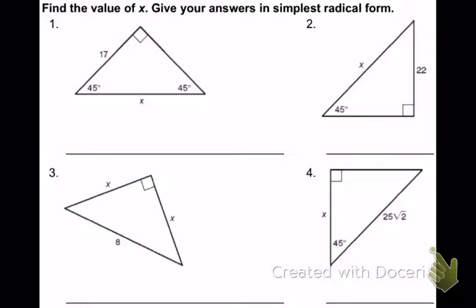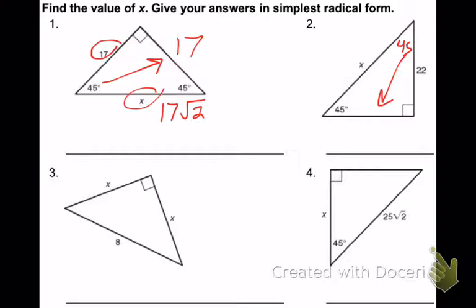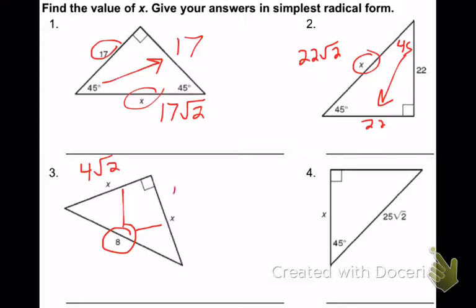Let's try numbers 1 through 4 — all 45-45-90 triangles. Number 1: side of 17, so the other leg is 17, and the hypotenuse is 17 square root of 2. Number 2: 45-45-90 with a leg of 22, hypotenuse is 22 square root of 2. Number 3: hypotenuse is 8 — divide by 2 and multiply by square root of 2 — both legs are 4 square root of 2.